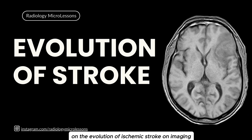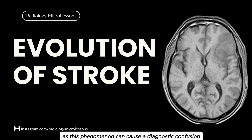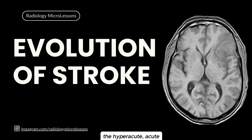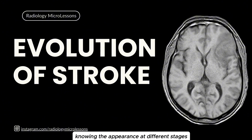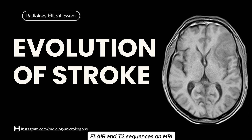Welcome to this tutorial on the evolution of ischemic stroke on imaging. We will go through how the appearance may differ on MRI and CT throughout the timeline, and additionally will discuss CT and MRI fogging, as this phenomenon can cause diagnostic confusion. We can roughly divide the timeline into four stages: the hyperacute, acute, subacute, and chronic. Knowing the appearance at different stages may help guide treatment when the onset is unknown. We will focus on the DWI, ADC, FLAIR, and T2 sequences on MRI.